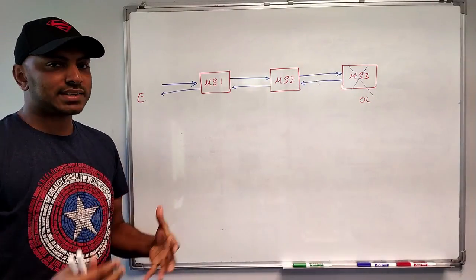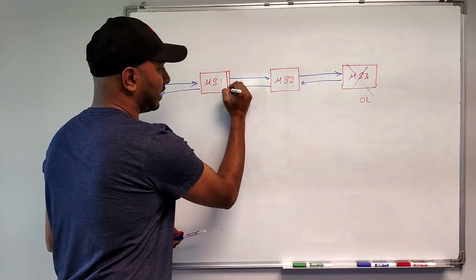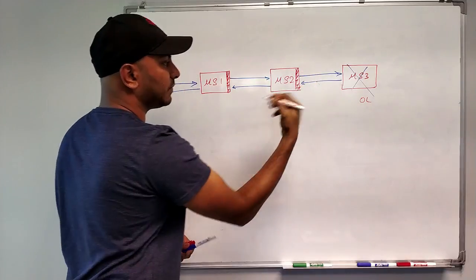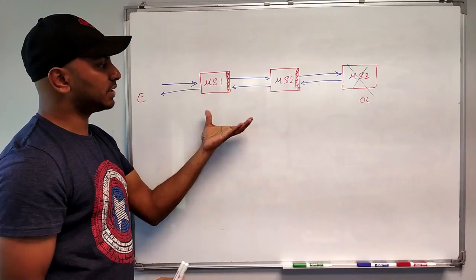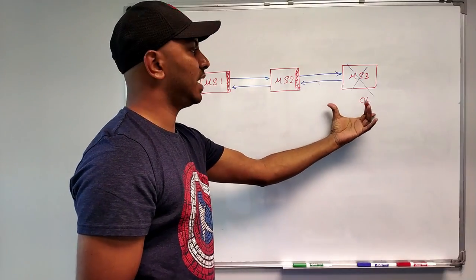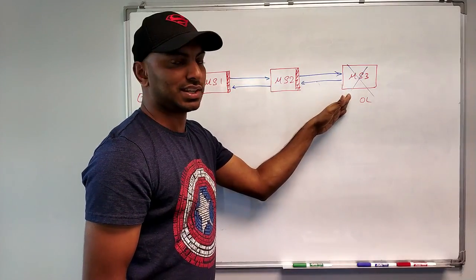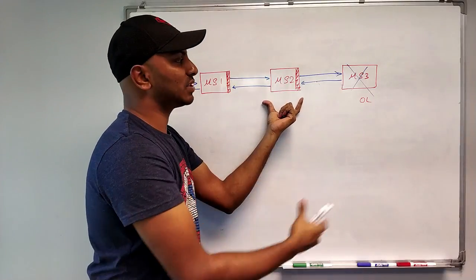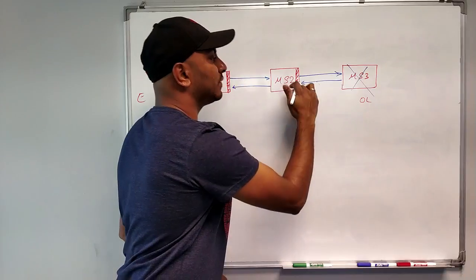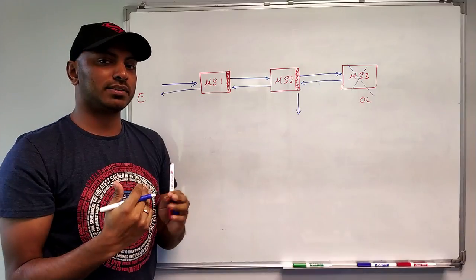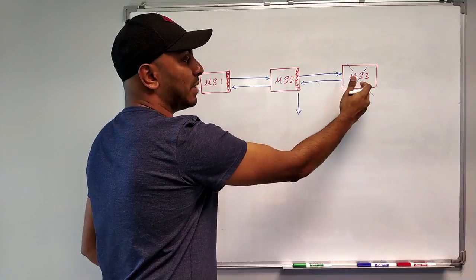So how do we make things better? Let's implement circuit breaking. The circuit breaker will come to know that the service it just called is returning an error. It actually remembers or makes a note of which service failed and how many times. It remembers that microservice three just returned an error.